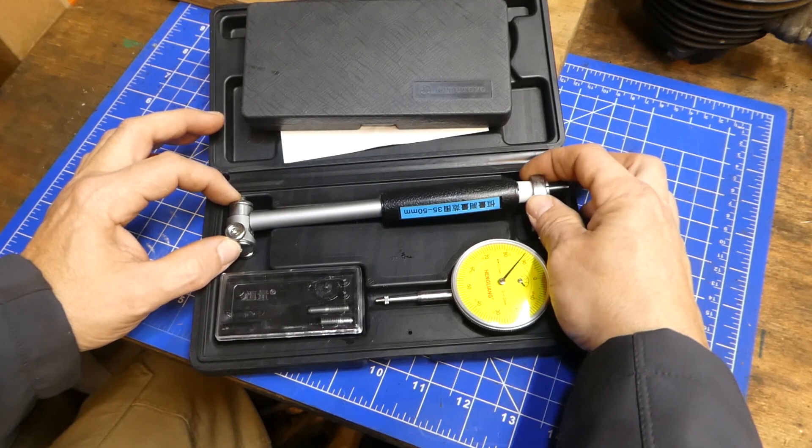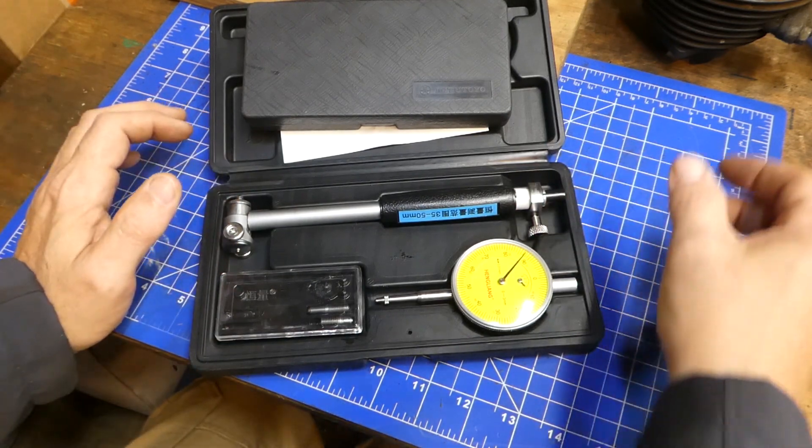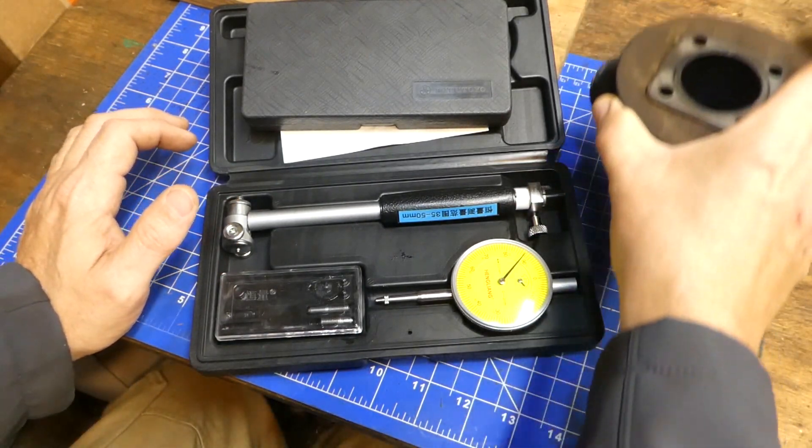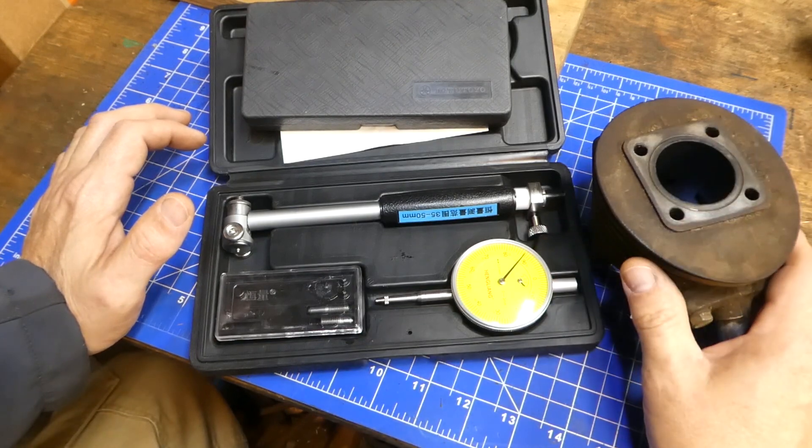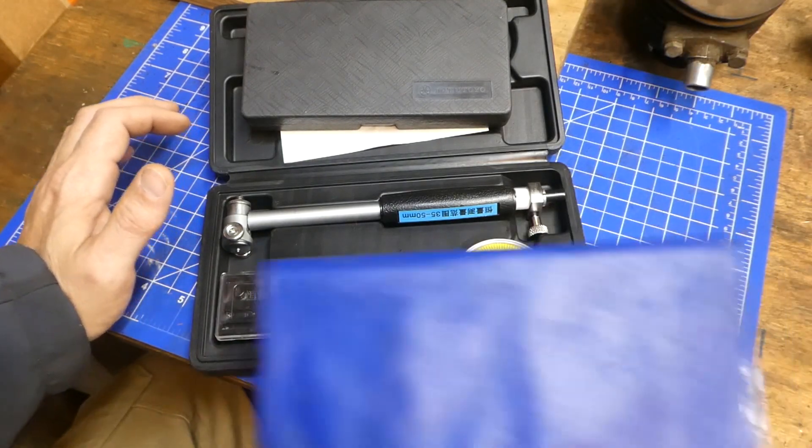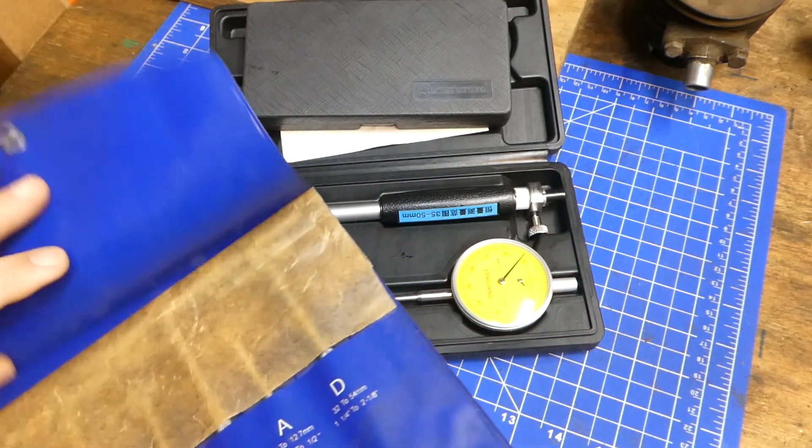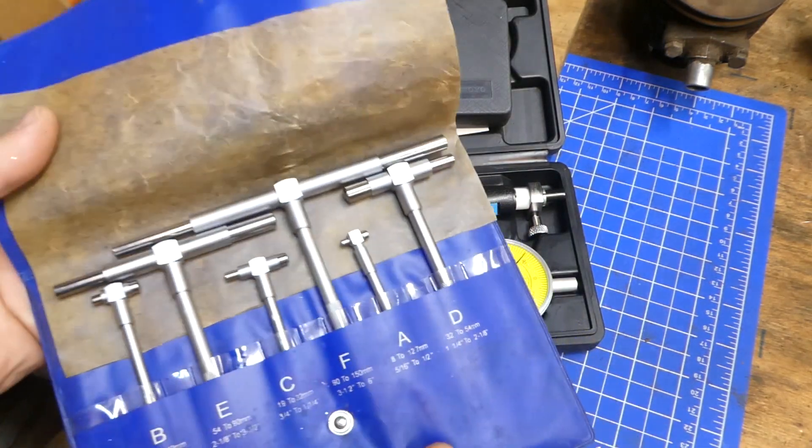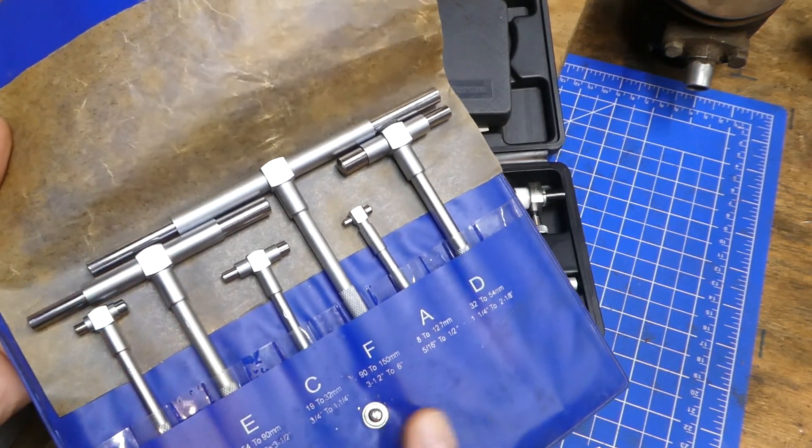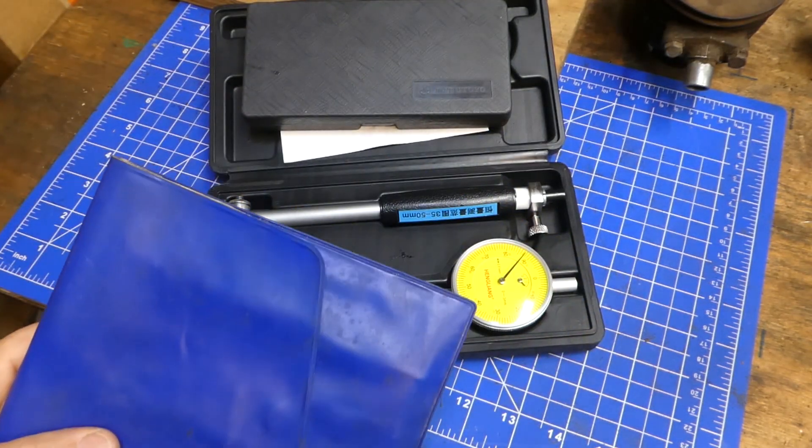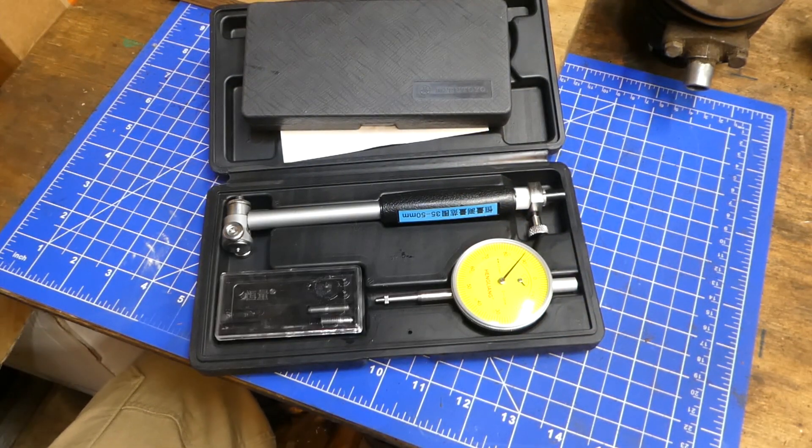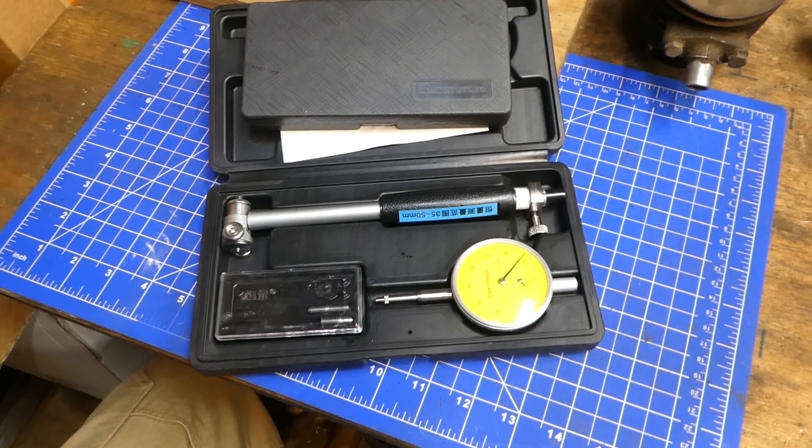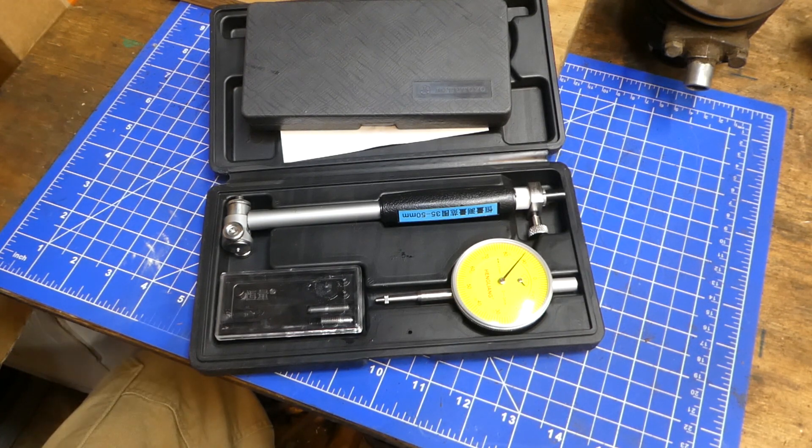In case you are not familiar what a bore gauge is, which I'm sure if you watch this channel you probably are, but just in case, it measures bore diameter. I have always used snap gauges to do that or telescopic gauges. This sort of set which most everyone probably has. And for getting a general measurement of a bore or cylinder, they work fine.